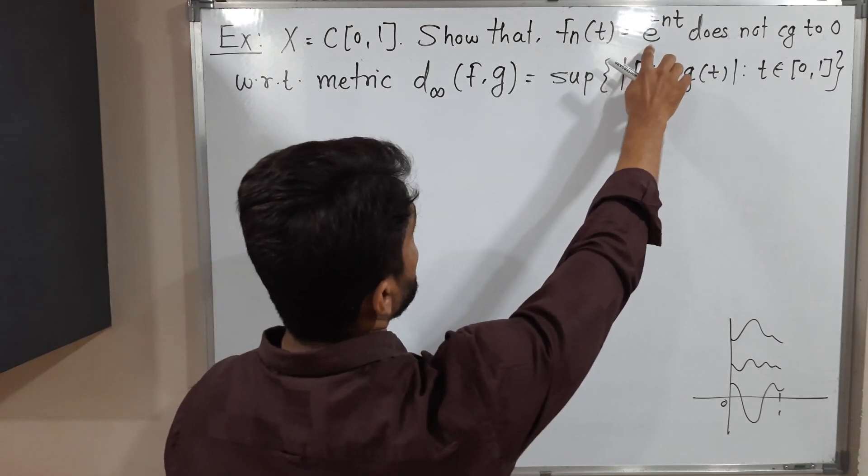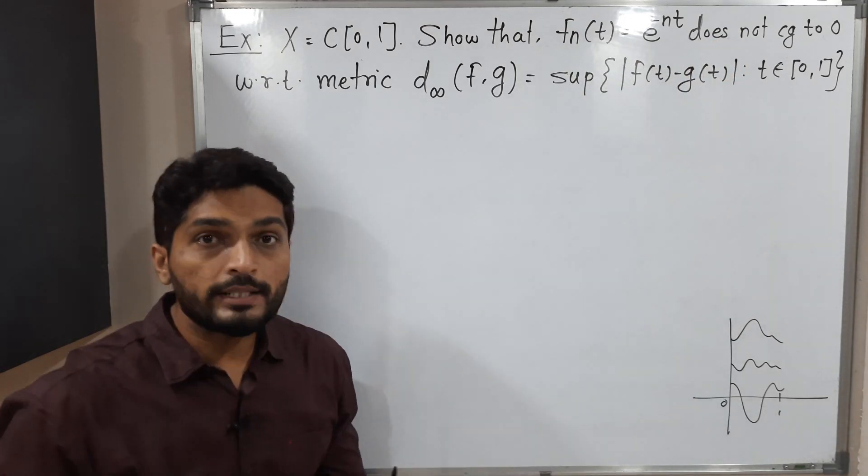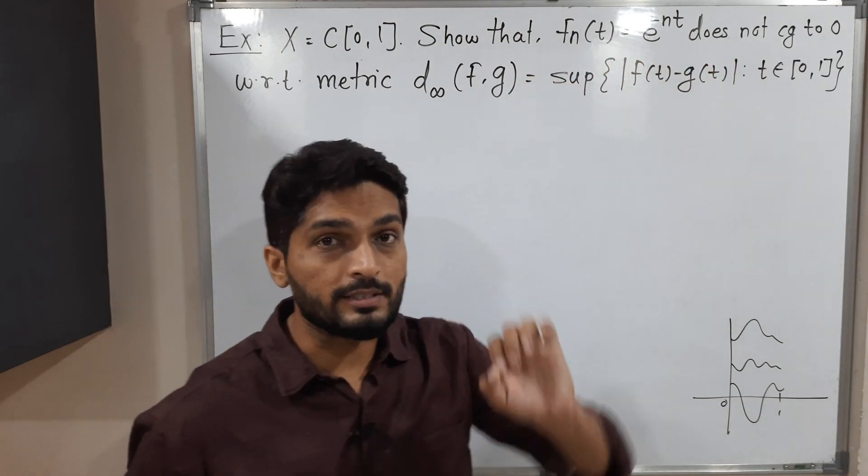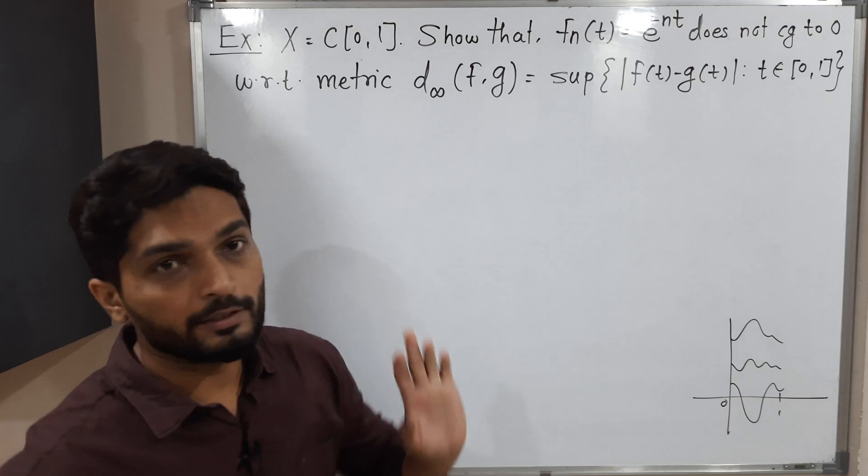Fn(t) = e^(-nt) and it is a sequence of functions. We have to prove that it does not converge to 0 with this metric D∞.